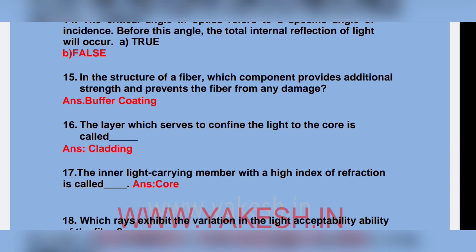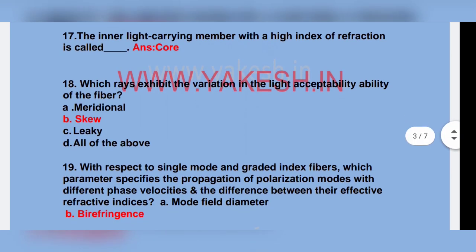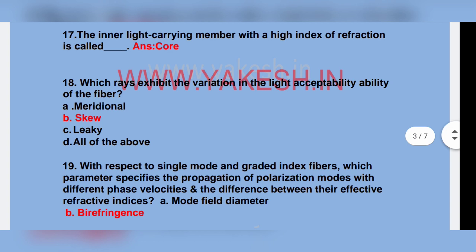The layer which serves to confine the light to the core is called cladding. The inner light-carrying member with a high index of refraction is called core, which will exhibit variation in light acceptance. The acceptability of the fiber: skew.